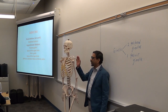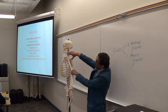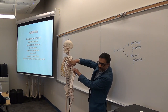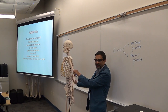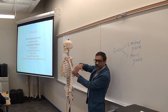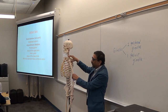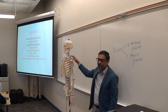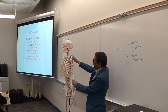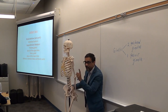Now, functions of these girdles. The pectoral girdle connects the upper limb bones to the axial skeleton, and it secures the upper limbs. The pelvic girdle has more functions.